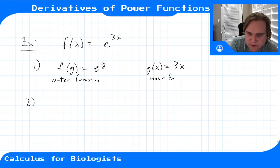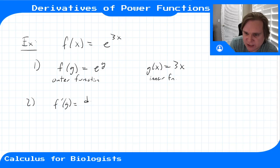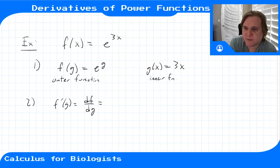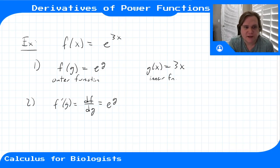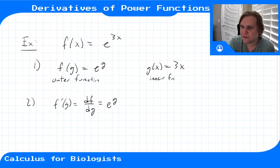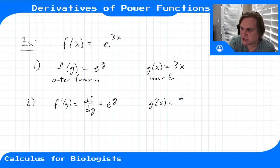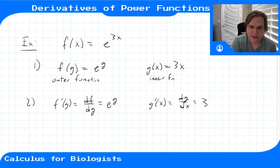Next, we compute the derivatives separately. The derivative of the outer function, df/dg, gives us e^g — the derivative of an exponential function is just the same exponential function. Then the derivative of the inner function, g'(x) = dg/dx, is the slope of this line, which gives us 3.